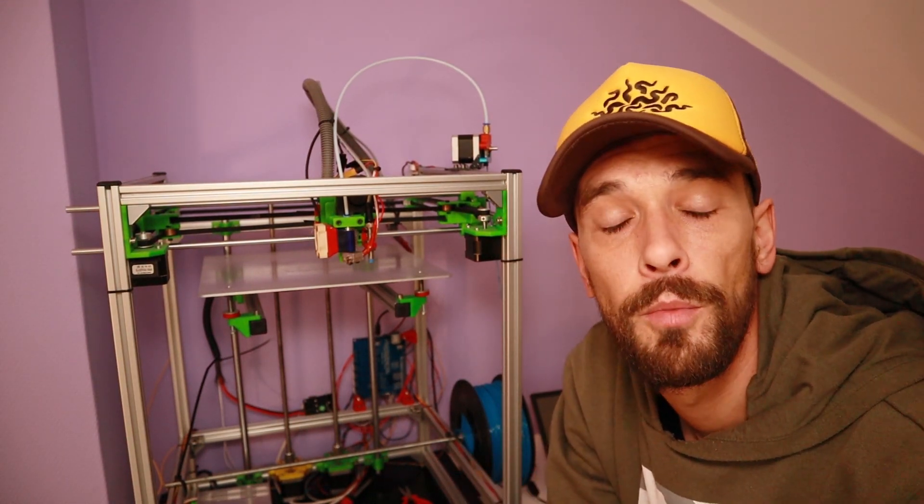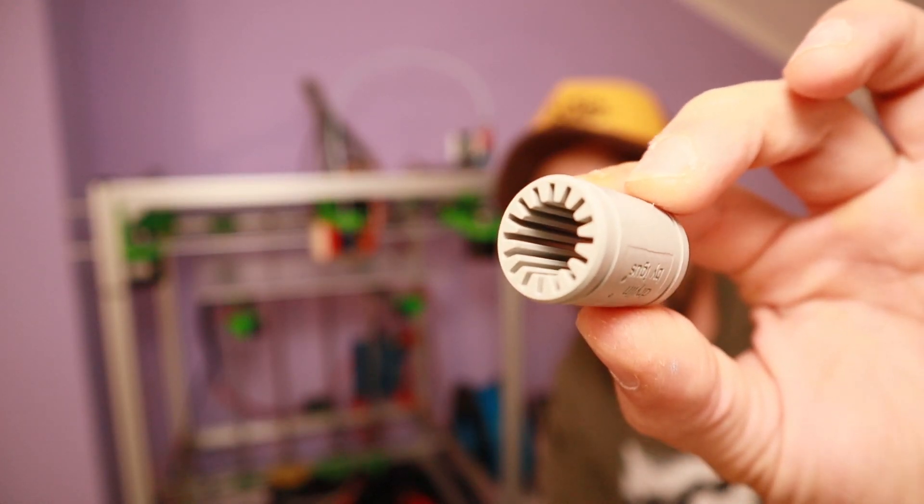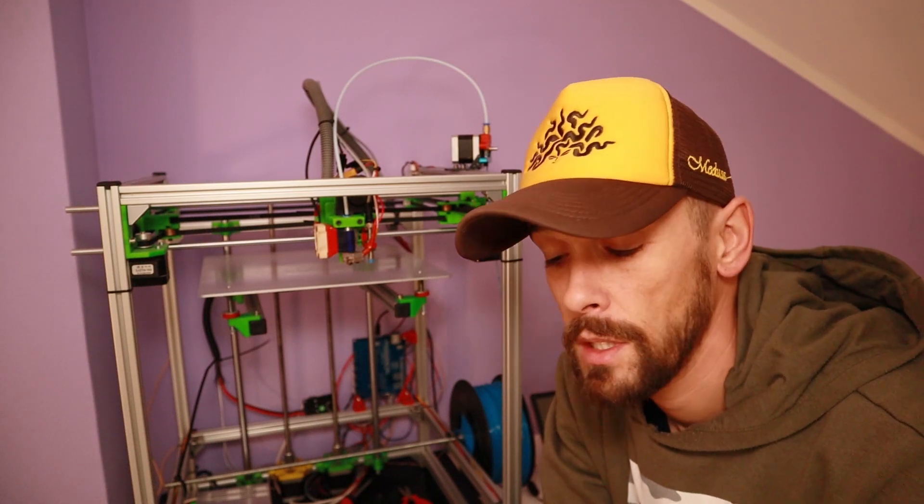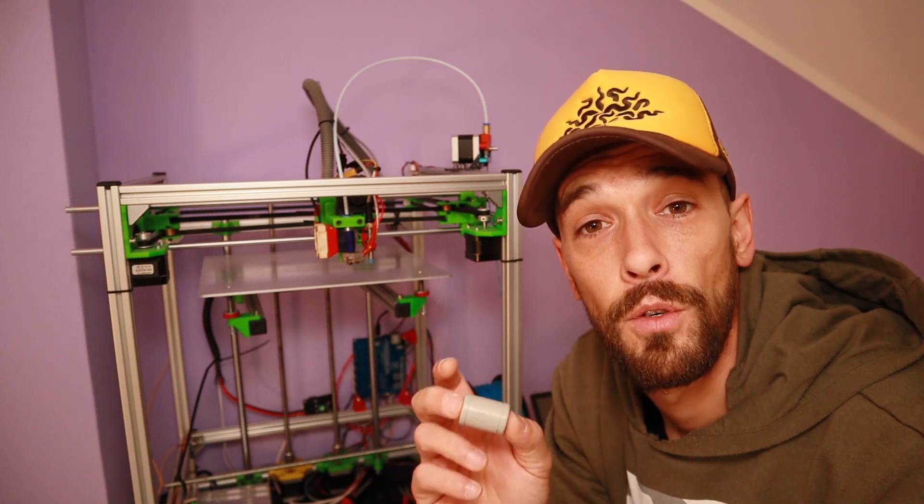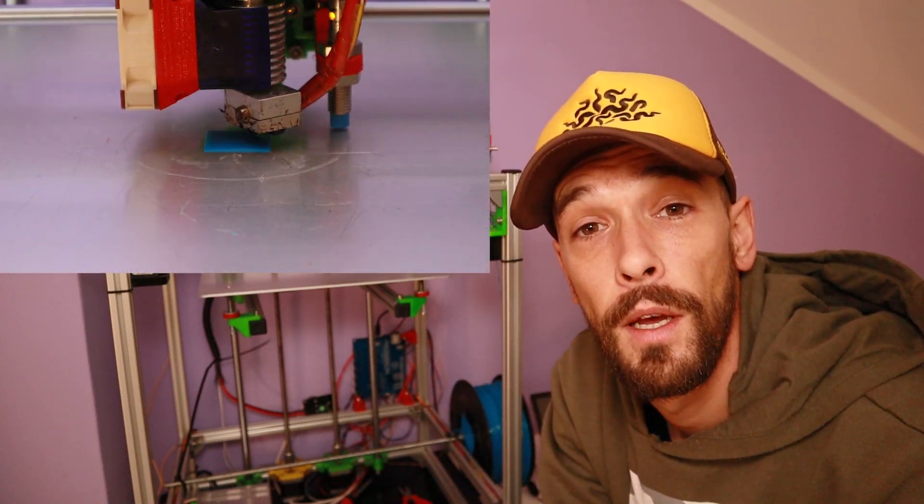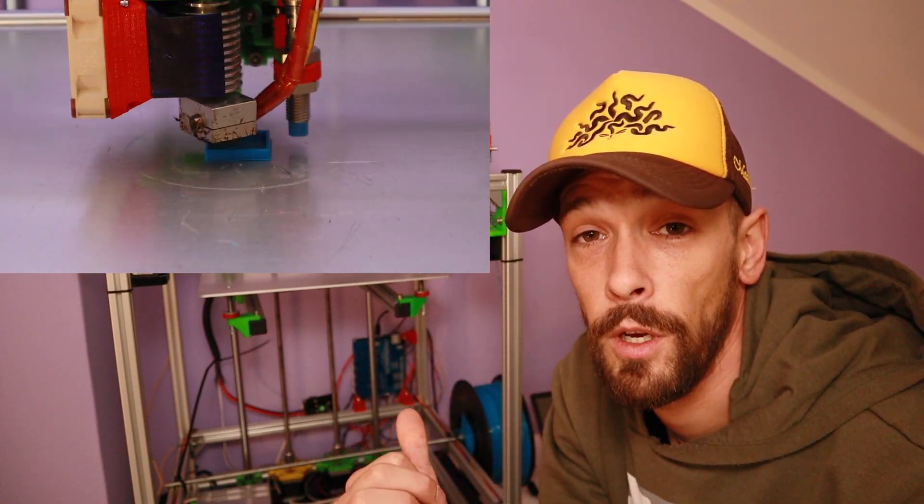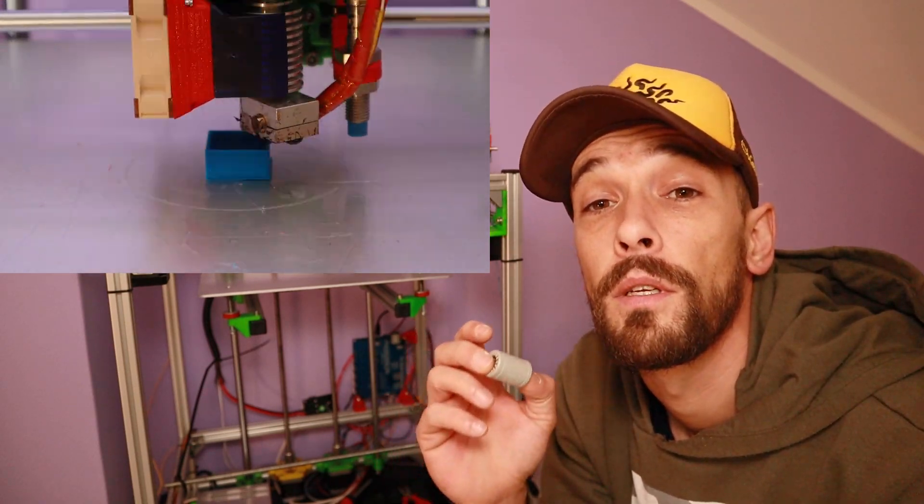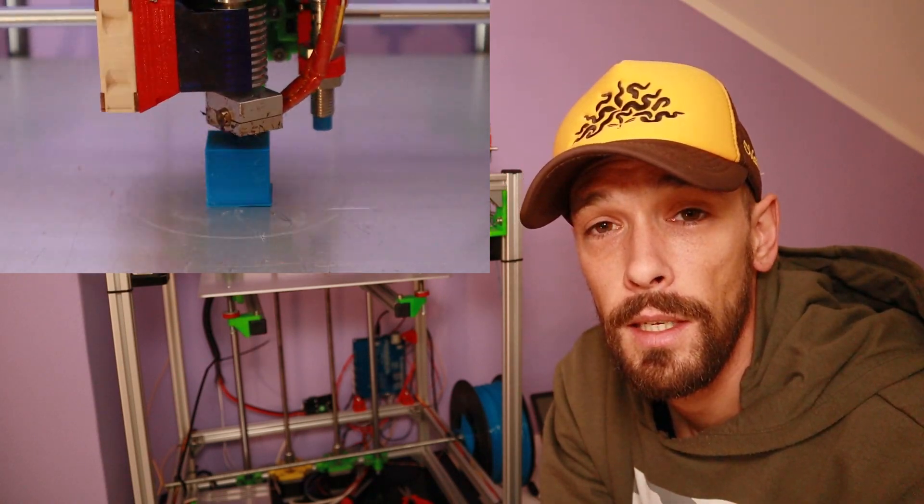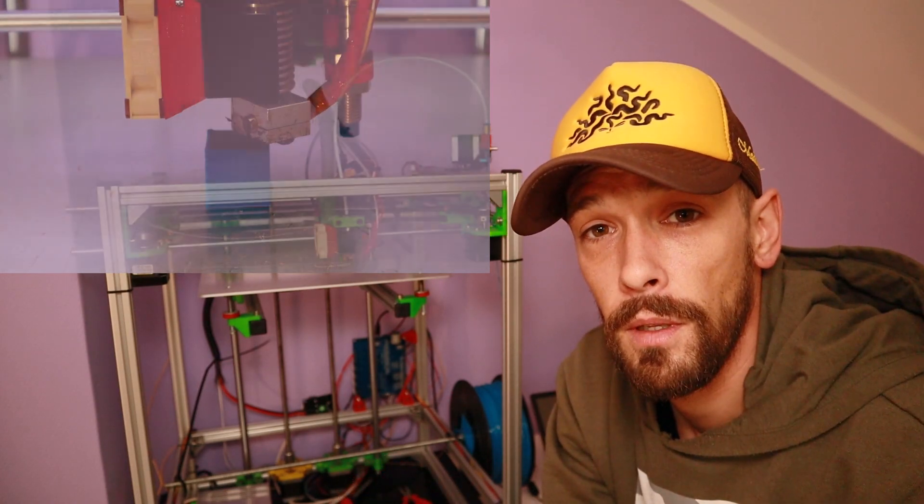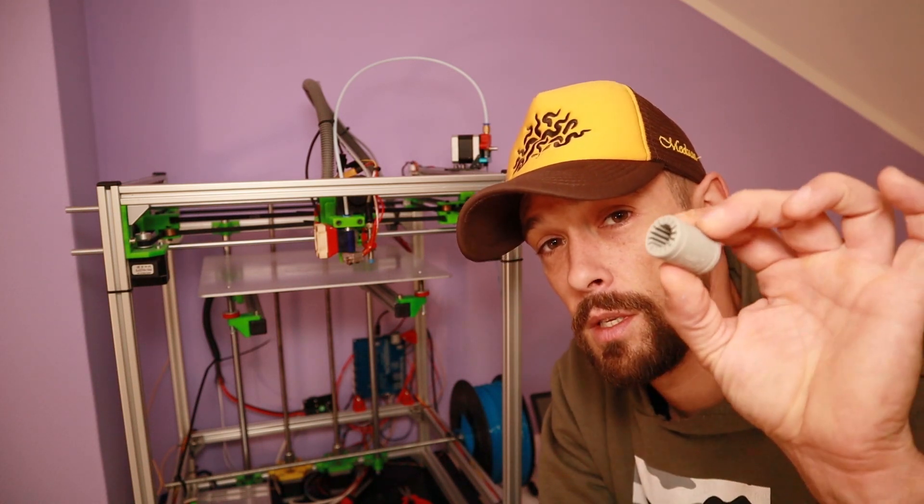That was the first upgrade that I made on the Hypercube. The second one I'll be doing with you guys and that's installing these guys. These are 12 millimeter Igus bearings. I heard a lot of good things about them. I want to convince myself so I'm going to do it with you guys. We are going to print out a calibration cube like you can see here with the regular bearings and after I install these I will print out the same STL file and see if it actually is any better. I do got a little bit of wobble on my Z axis and I hope that these can fix this.